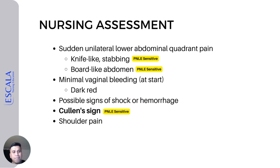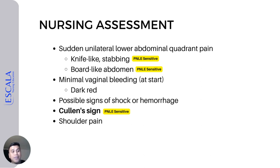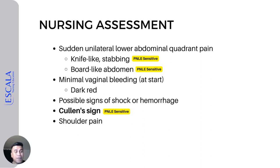There is also a possibility of shoulder pain in the patient because of the pressure exerted on the phrenic nerve. So to summarize nursing assessment: knife-like stabbing pain, board-like abdomen, dark red minimal vaginal bleeding — but upon rupture, watch for signs and symptoms of shock or hemorrhage — Cullen's sign may be present, and shoulder pain may occur due to pressure on the phrenic nerve.